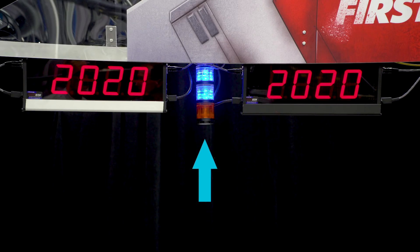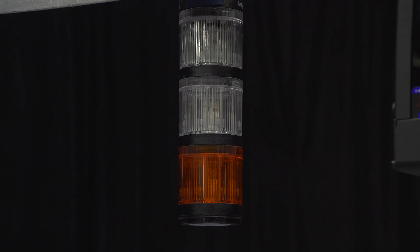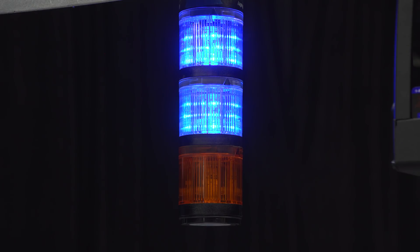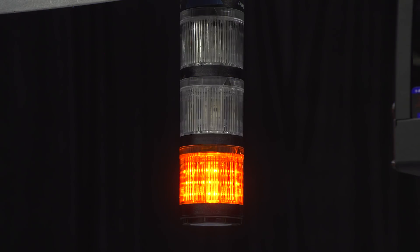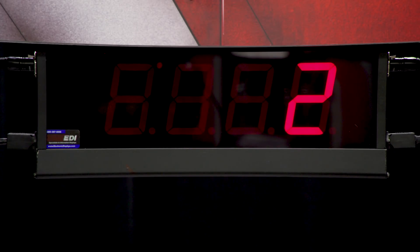Notice the stack lights above each player station. They relay information to the teams and field crew for quick diagnostics. Check out the game manual for full details on these indicators. Each player station also has a team sign that displays the team's number throughout the match.